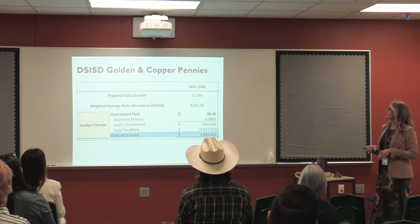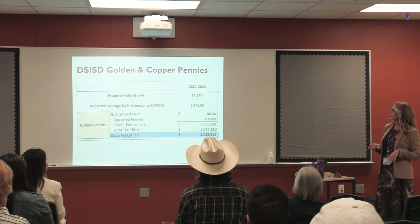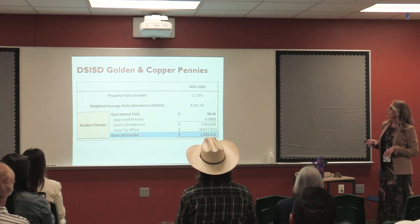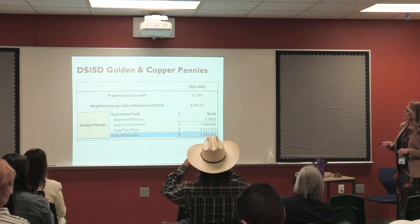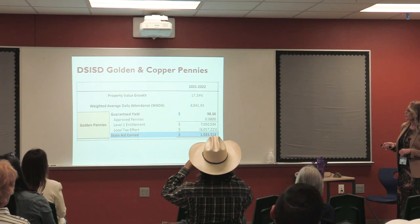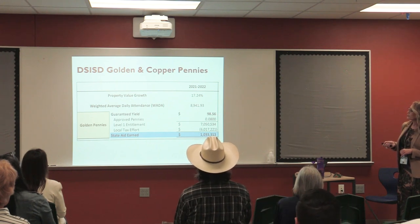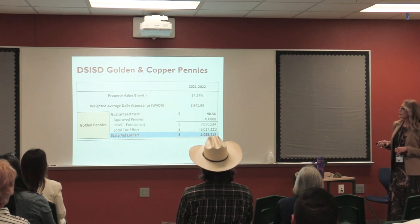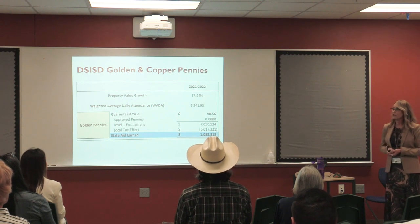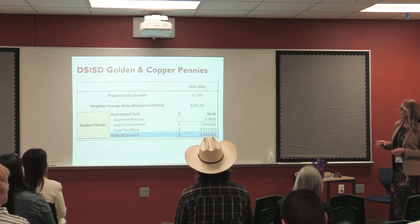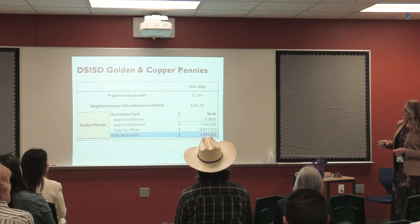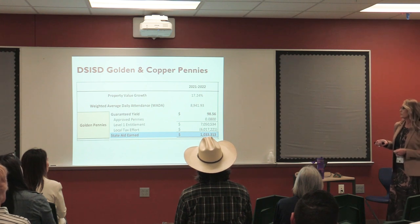Let's look at Dripping Springs' actual numbers from last year — 21-22. We had 17% property value growth. Our WADA was 8,941, with a guaranteed yield of $98.56 and eight golden pennies. Taking $98.56 × WADA × 8 pennies, we were guaranteed to earn $7,050,000 on those golden pennies. But when we applied those eight pennies to our values, we only generated $6 million — so the state kicked in another million. We would have left a million dollars of state aid on the table if we hadn't had those pennies.